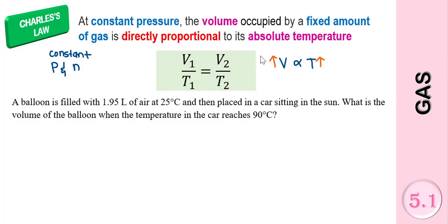That's why Charles' Law states that at constant pressure and fixed amount of gas, the volume occupied is directly proportional to its absolute temperature. Now let's have a look at an example question.